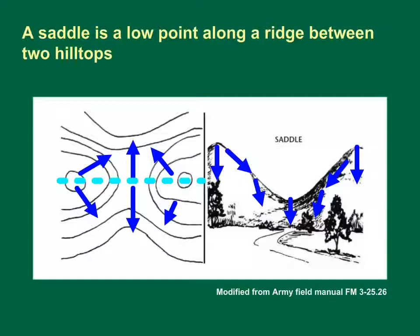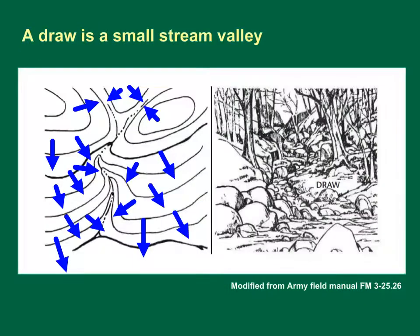A draw is a small valley. The draw is shown in map view on the left and landscape view on the right. A draw has essentially no level ground. If you are standing in a draw, the ground slopes upward in three directions and downward in the remaining direction. You could consider a draw to be the initial formation of a valley. A valley will usually have many draws feeding into it, with streams or intermittent streams feeding into the body of water flowing through the valley.